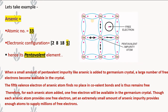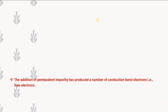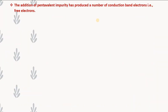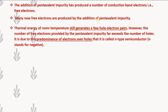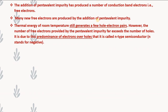Therefore, for each arsenic atom added, one free electron will be available in the germanium crystal. Although each arsenic atom provides only one free electron, an extremely small amount of arsenic impurity can supply millions of free electrons. The addition of pentavalent impurity produces a large number of conduction band electrons. The thermal energy at room temperature still generates a few electron-hole pairs, but the number of free electrons provided by the pentavalent impurity far exceeds the number of holes.